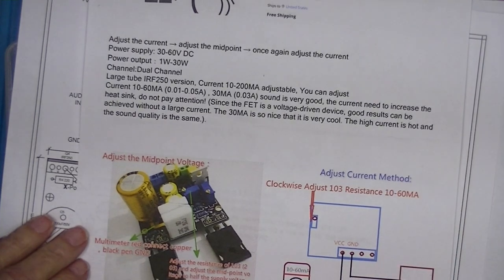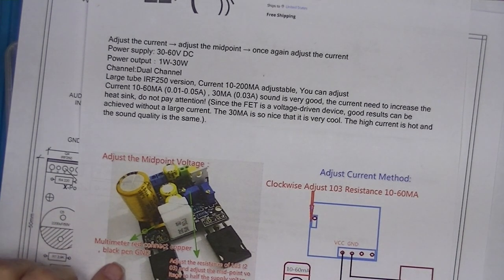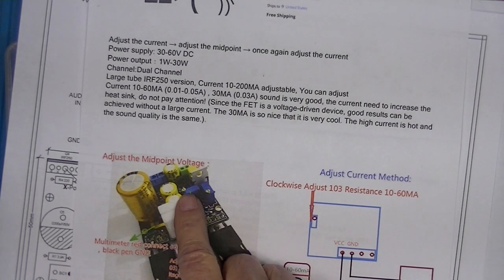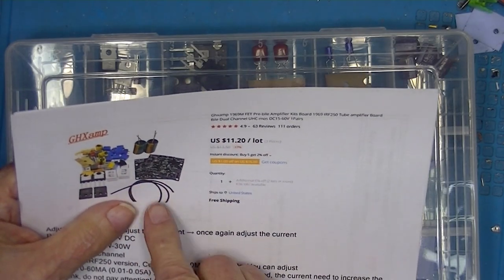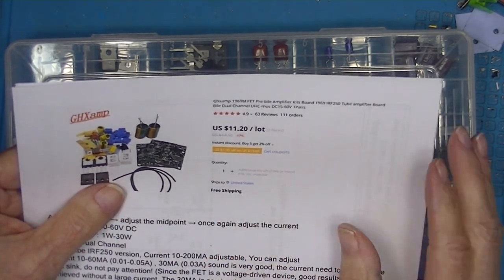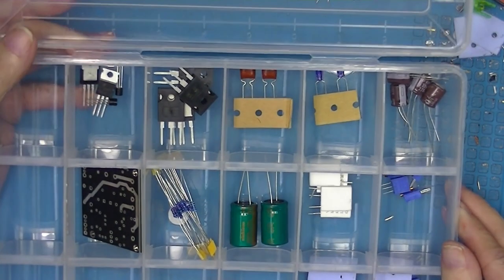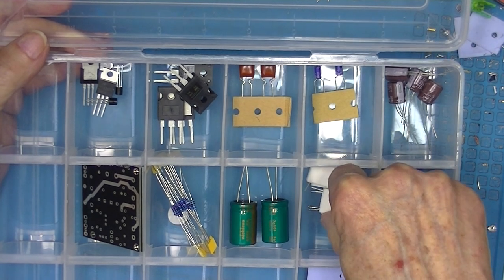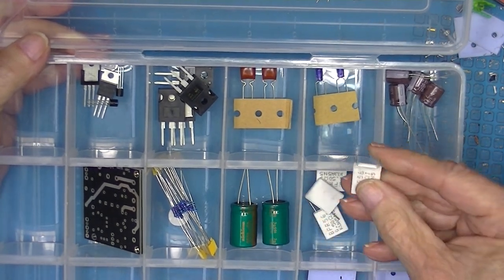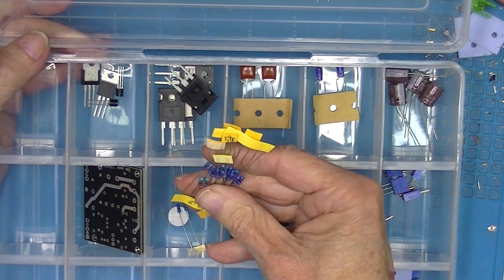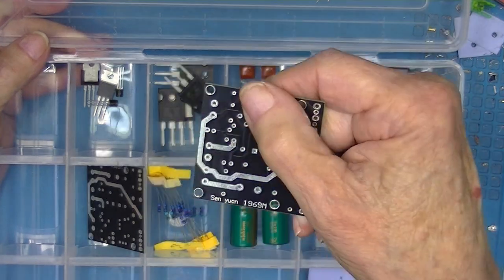10 to 60 milliamps, that certainly is not very much current. It tells us where to measure the X point and which potentiometer to use. A pair of these, two channels, eleven dollars and twenty cents, free shipping. Once again, all resistors except for the ones in the output stage are very low wattage.